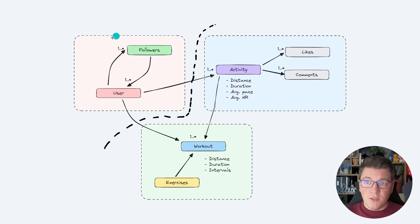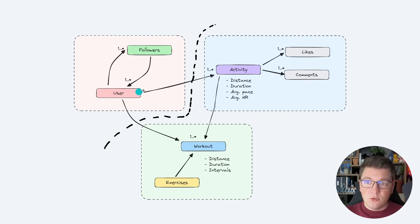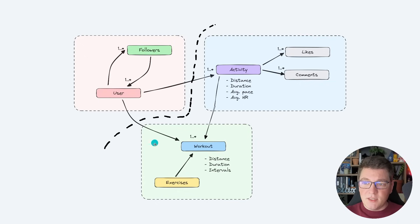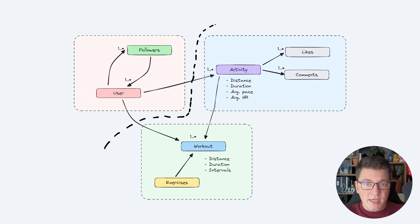A quick recap for the two modules I'm planning to create: one is going to be the users module with the users and followers, and the other will be the training module with the activity, workouts, and exercises. Now, what are some other considerations we should make when deciding how to split our modules?